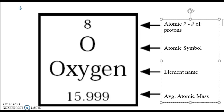Atoms of the same element can have a different number of neutrons — that's called an isotope. They can even have a different number of electrons through the bonding process. But if they've got a different number of protons, it's a completely different element. So the atomic number is the same as the number of protons.